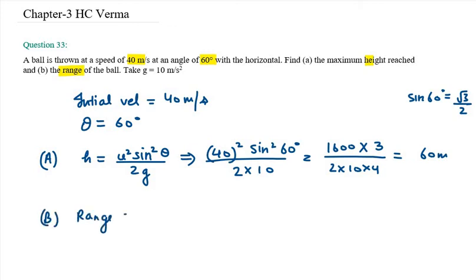Now we have to find the horizontal range. So x ko define kya jata hai u square sin 2 theta over g. u square is 40 square, sin 2 theta is sin 2 into 60 degree. Ab g ki value kithne ki huya hai, 10 ki huya already.